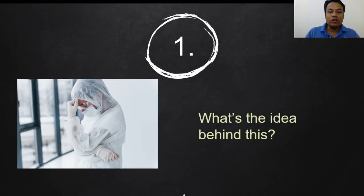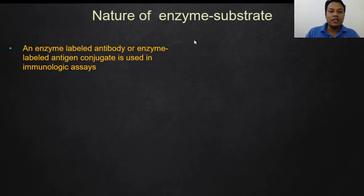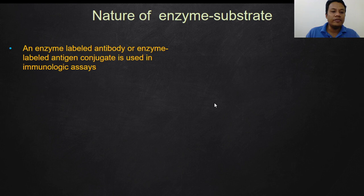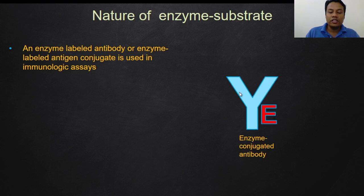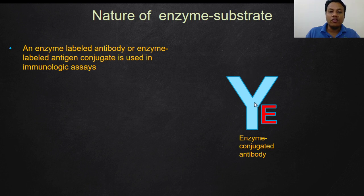Let's have a look at the idea behind EIA. EIA applies the nature of the reaction between enzyme and substrate. An enzyme-labeled antibody or enzyme-labeled antigen conjugate is used in immunologic assays. This enzyme-conjugated antibody — the antibody and the enzyme — is not from the patient. These are commercially produced antibodies, and they are one of the reagents for EIA.